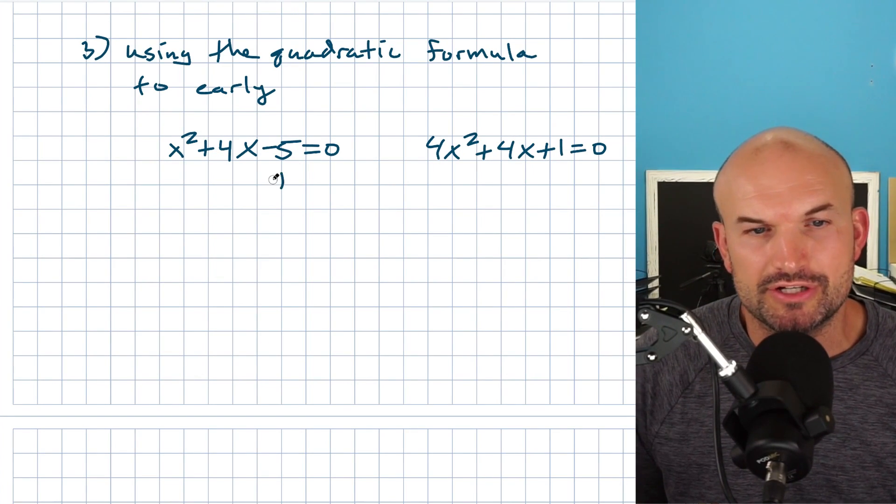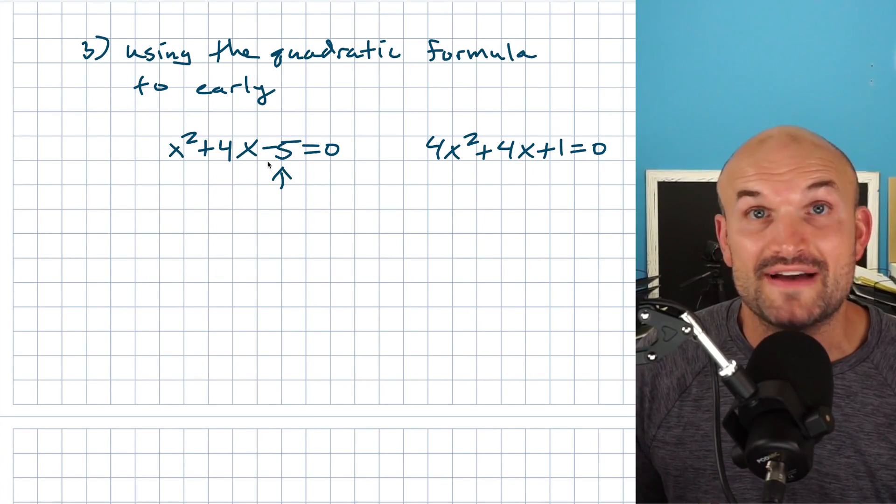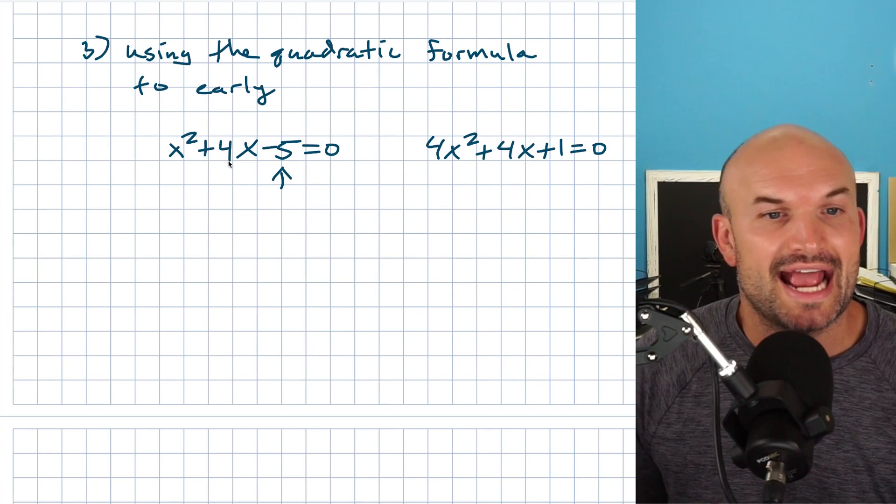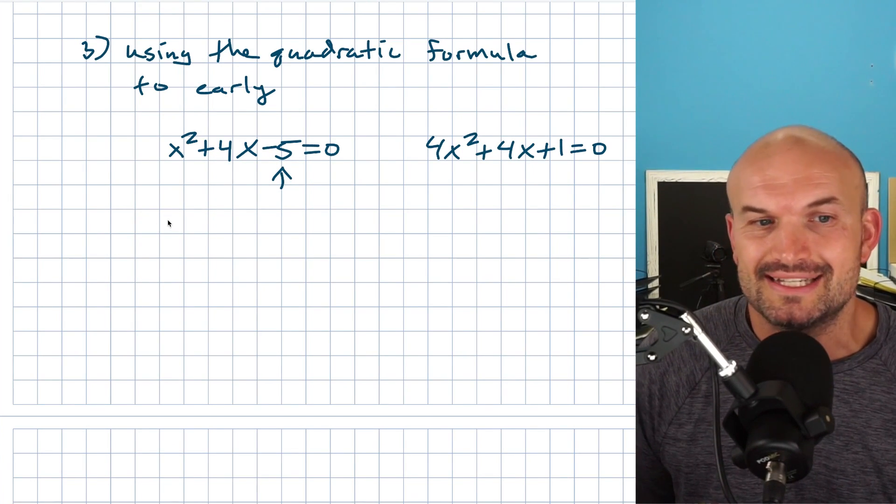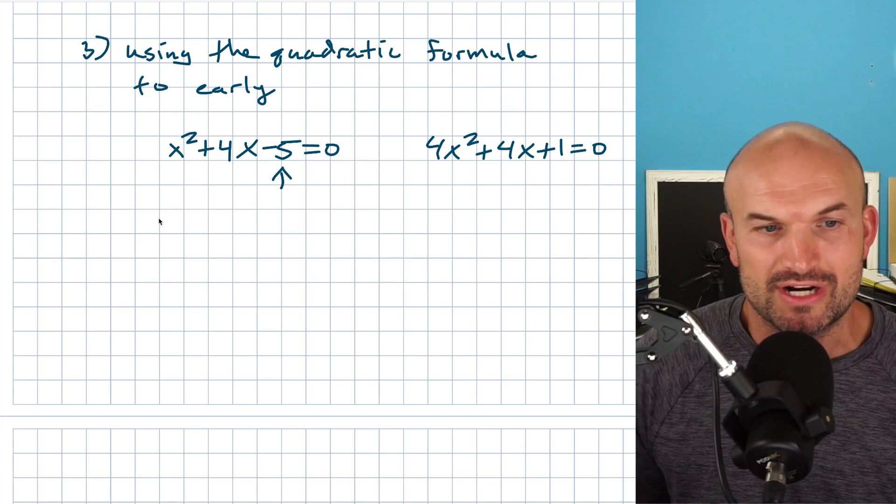And I'm basically like, all I need to do to determine if this is factorable is just look at the factors of negative five, see if they can go ahead and add to four. And again, you can see that, yes, this does actually work. I wouldn't want to go through the quadratic formula here.